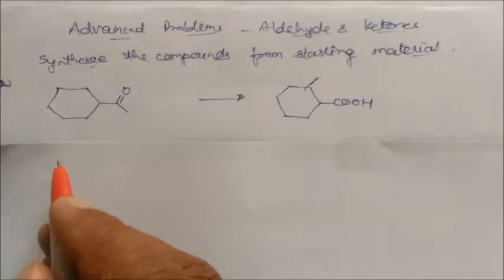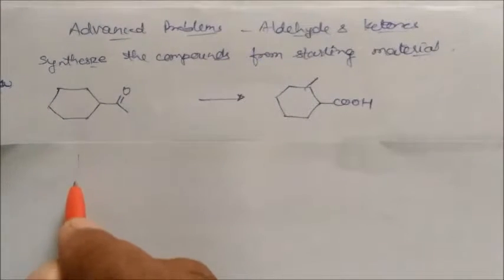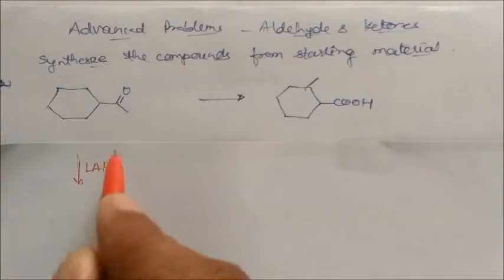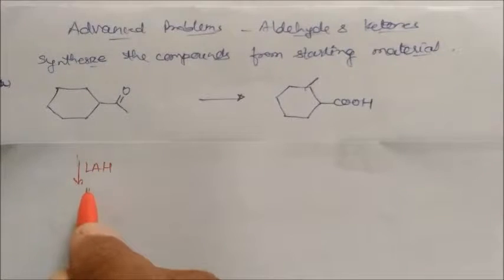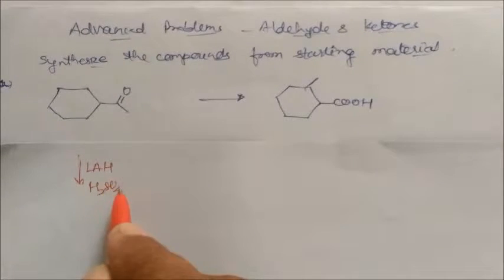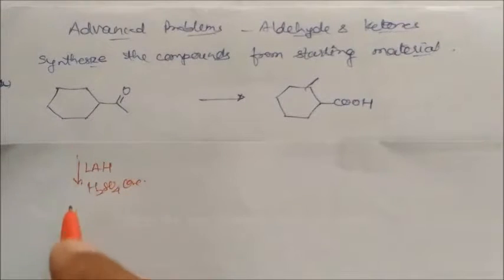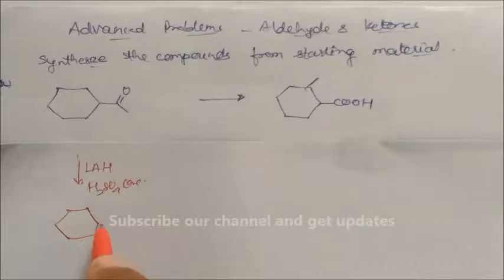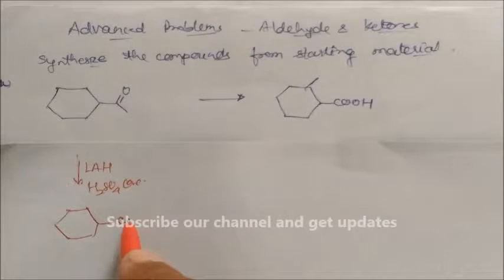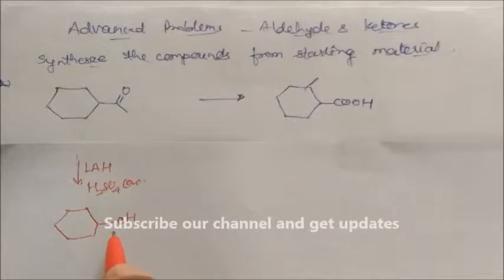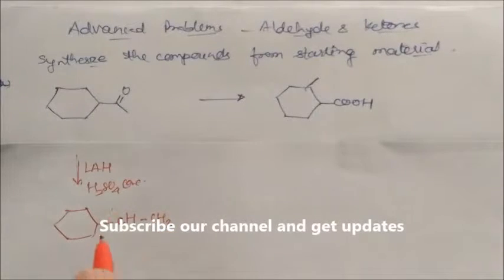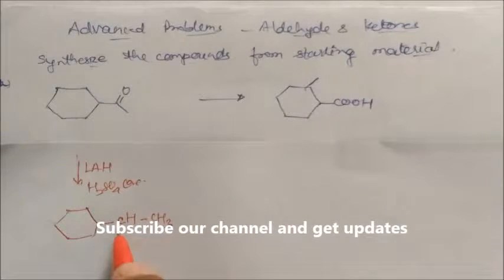We will take this compound and react it with lithium aluminium hydride (LiAlH4) in presence of H2SO4. This compound will be converted into a product CH with CS3, and a double bond is present with one hydrogen.